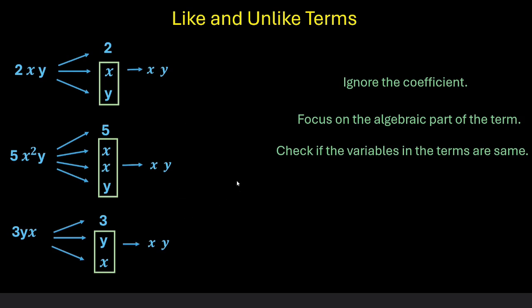But the fourth step is very crucial. We need to check if the powers of each variable in the terms are same. Let us go to the first term. Here x has a power of 1 and y has a power of 1. In the second term, which is 5x²y, x has a power of 2 and y has a power of 1. And in the third term, x has a power of 1 and y has a power of 1.